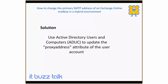So the solution in this case, and how we go about changing the primary SMTP address, is using Active Directory Users and Computers in your on-premise AD. We modify the proxy address attribute of the user account, and I'm going to step through that now.